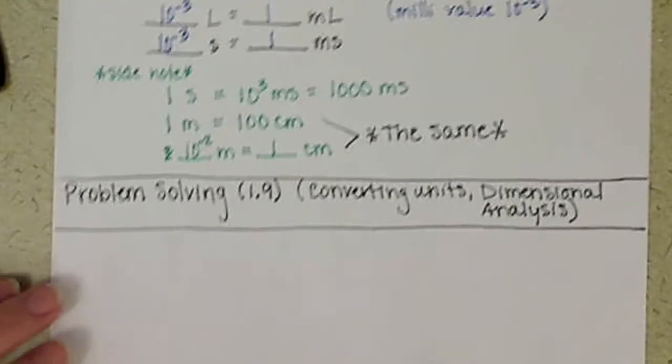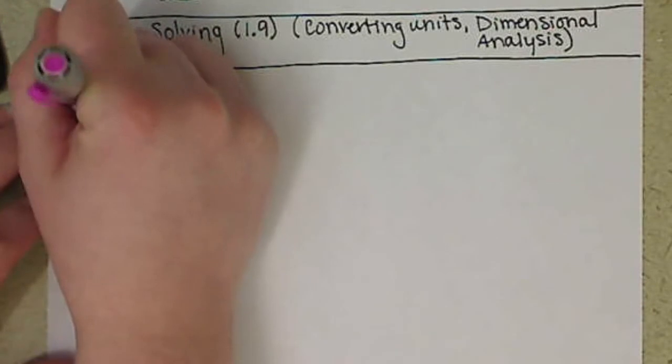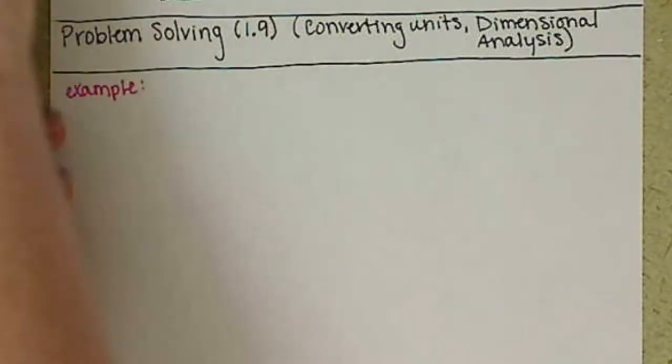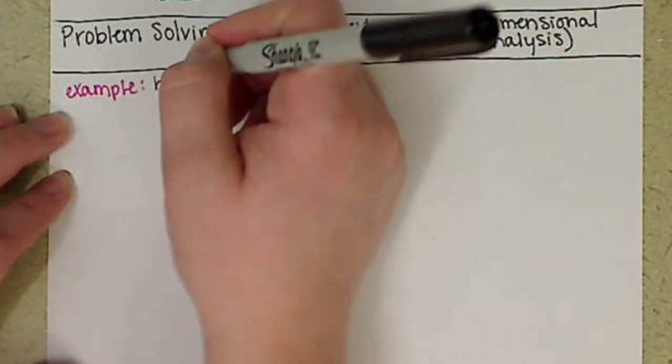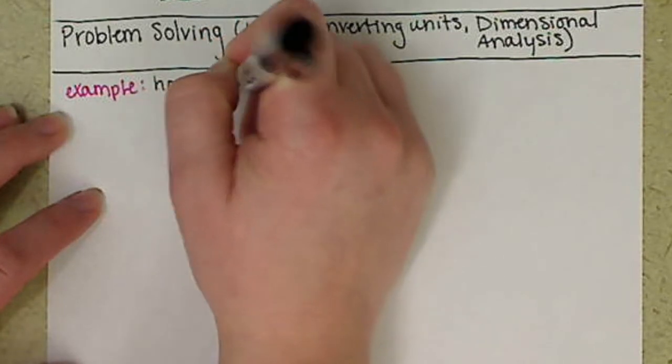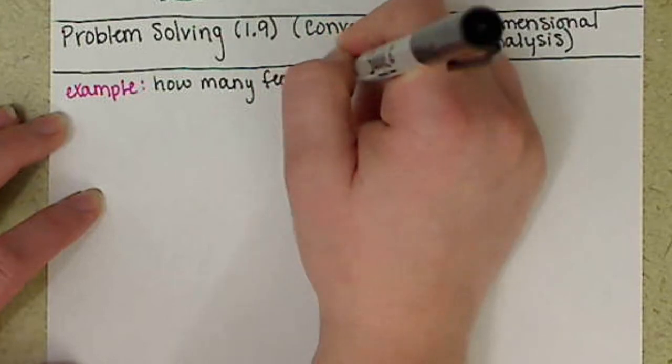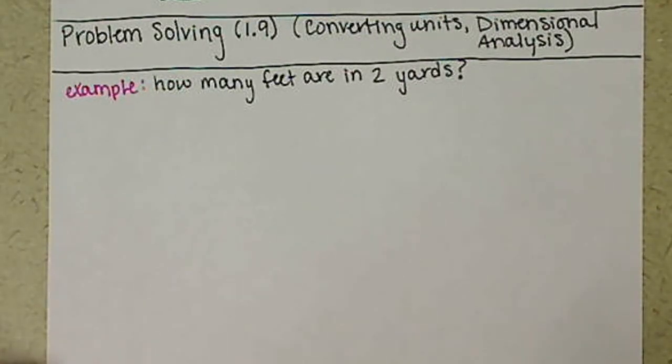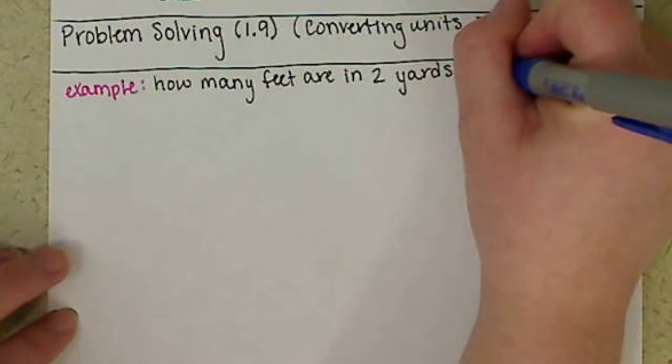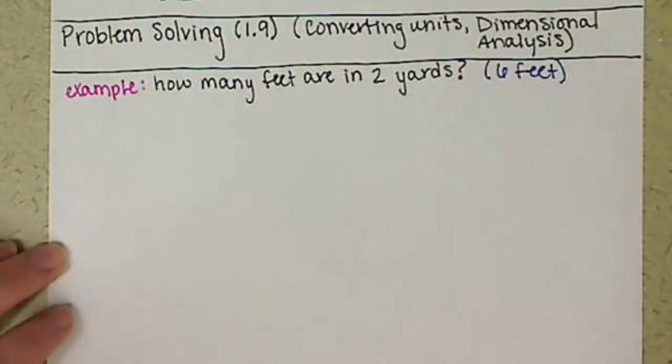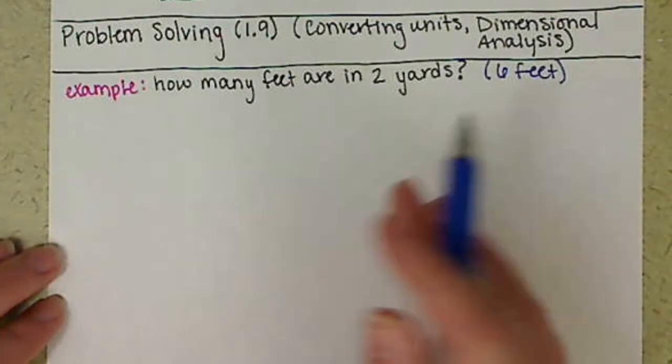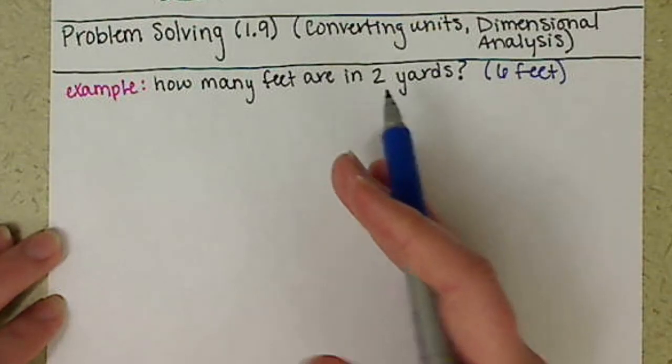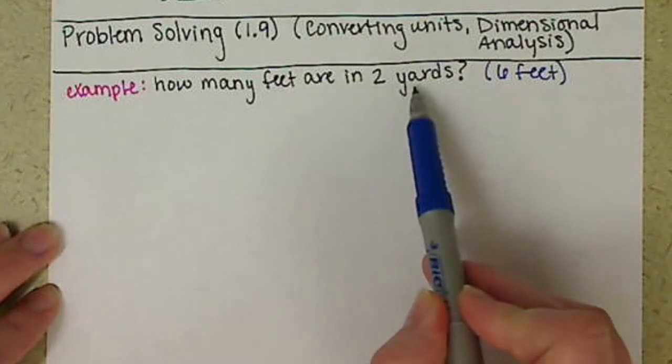We're going to work through a number of examples of how to convert our units. First off, we want to know how many feet are in two yards. Most of you probably already guessed six. What I'd like to do with an example like this, where you probably already know this is six feet, is show you the math that you did in terms of conversion factors so you can see how the math works in a simple example.